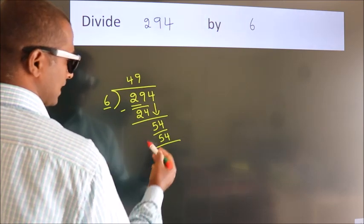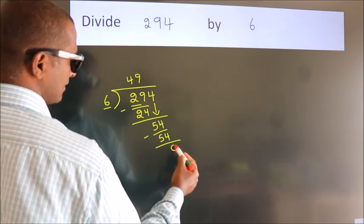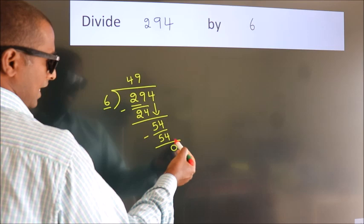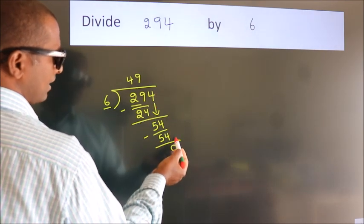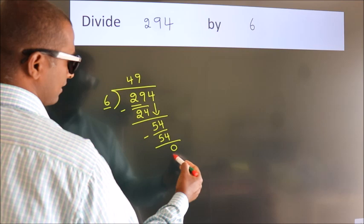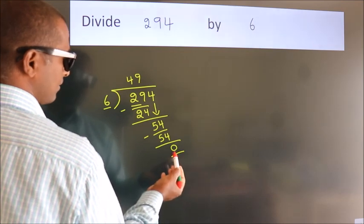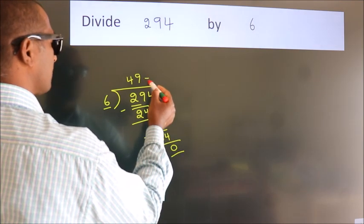Now, we subtract. We get 0. After this, no more numbers to bring down. And we got remainder 0. So, this is our quotient.